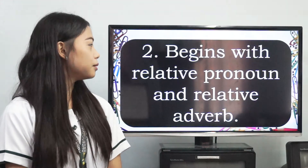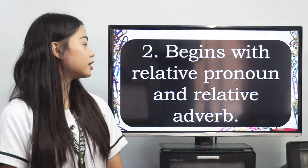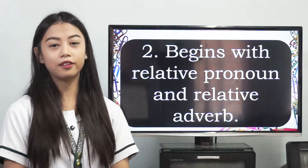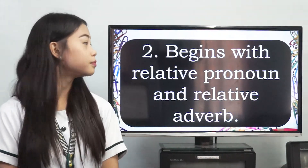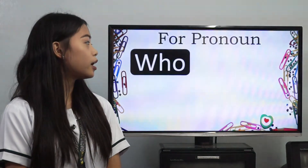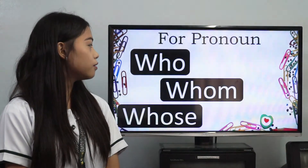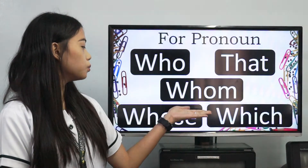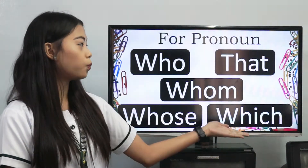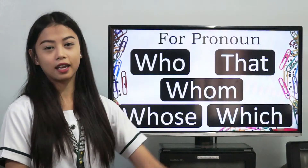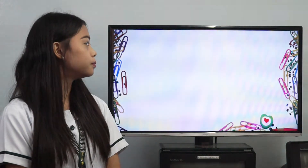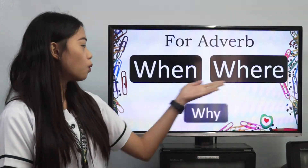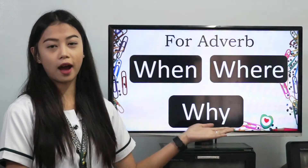Second, an adjective clause begins with a relative pronoun or relative adverb. For relative pronouns, these are: who, whom, whose, which, and that. And for relative adverbs: when, where, and why.